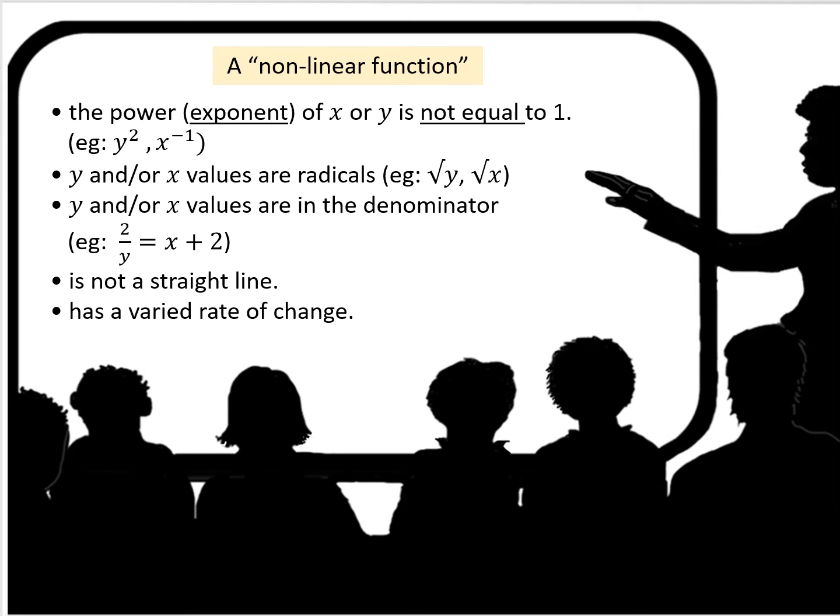y and or x values are radicals, like square root of y, square root of x. y and or x values are in the denominator. 2 over y equals x plus 2 would be a nonlinear function.